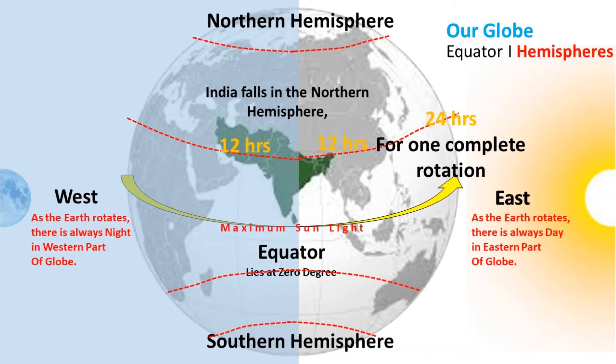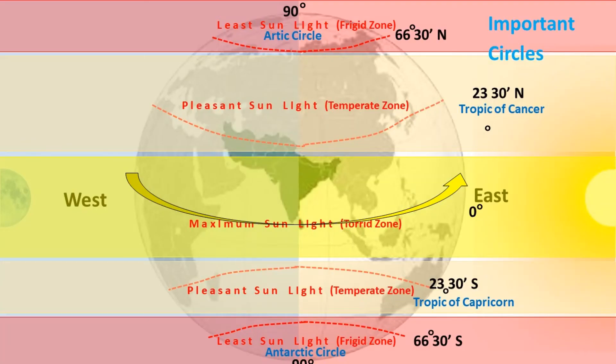The area near the equator receives maximum sunlight. This area is bordered by the Tropic of Cancer at 23 degrees 30 minutes north and the Tropic of Capricorn at 23 degrees 30 minutes south. This zone receives maximum sunlight and is called the Torrid Zone.